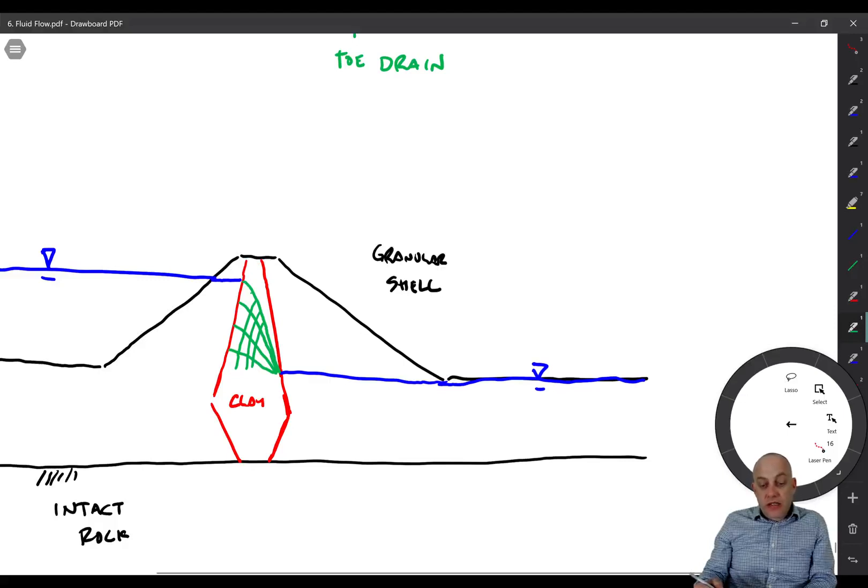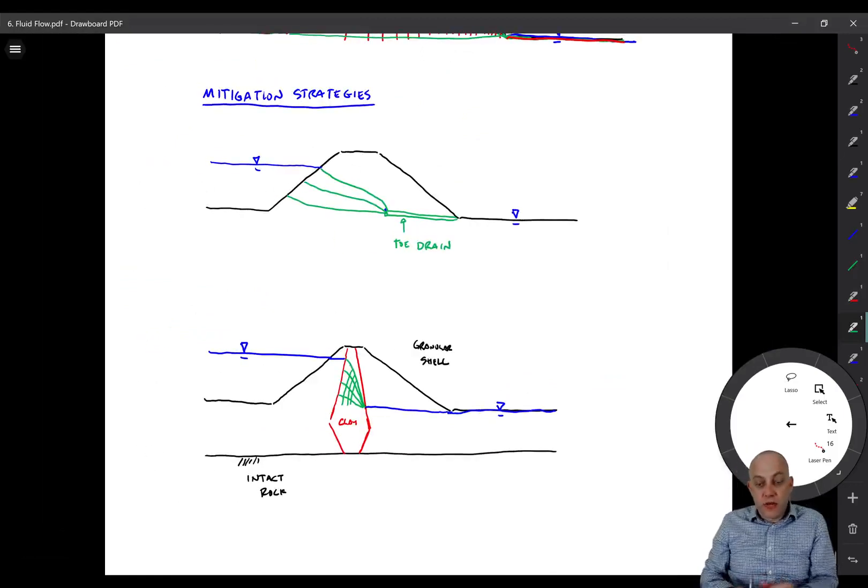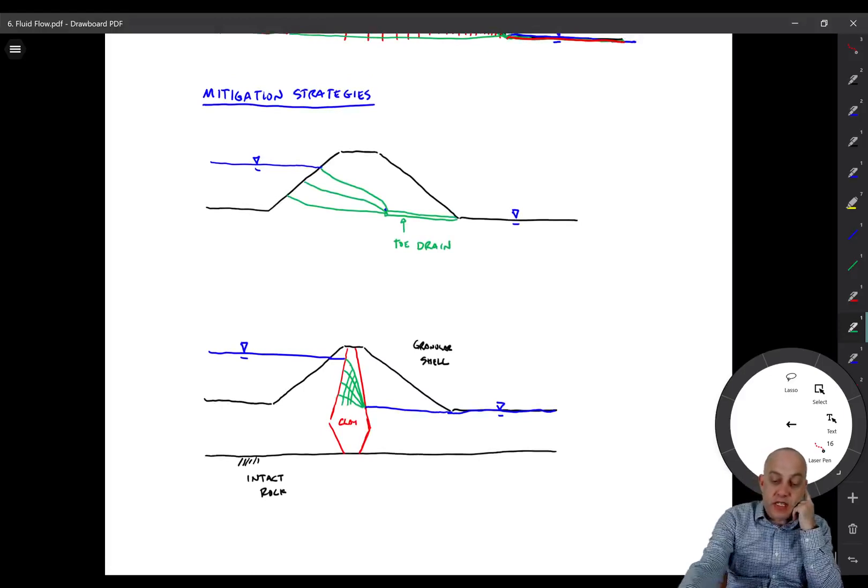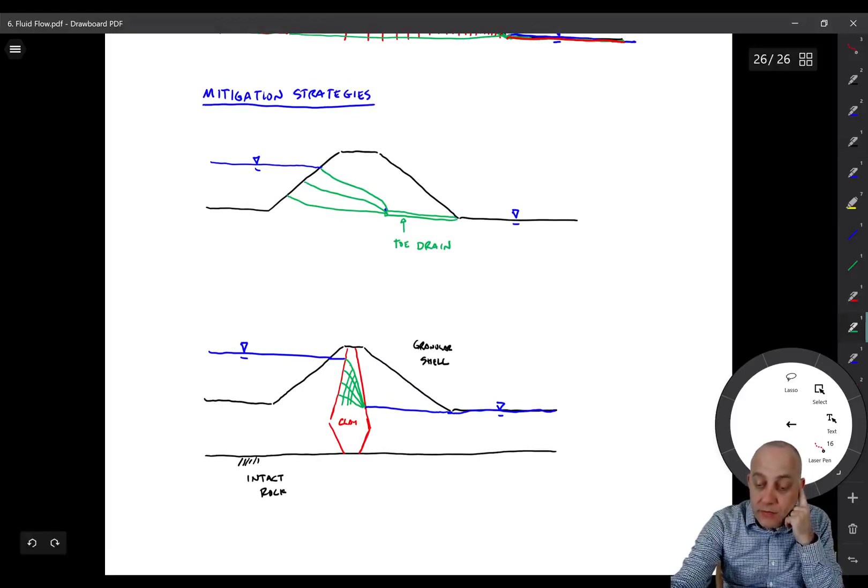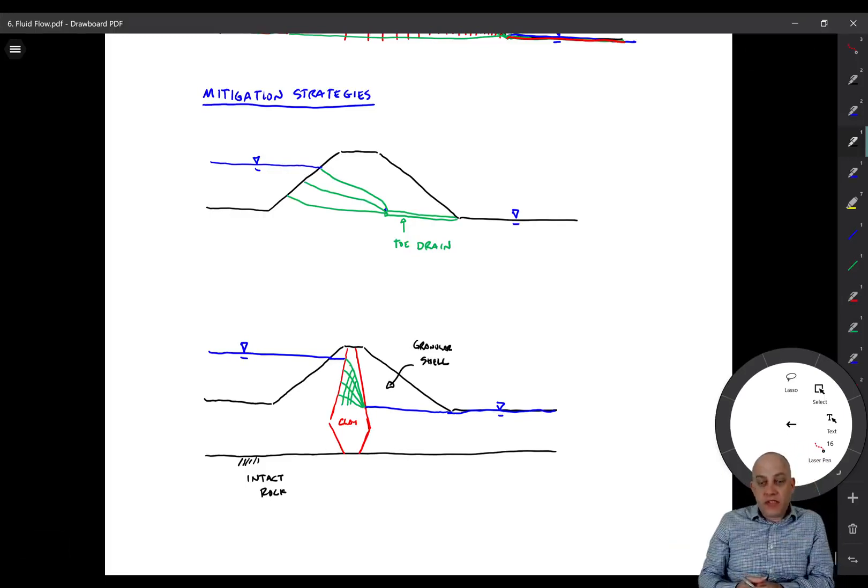So anyway, those are two different mitigation strategies for kind of controlling flow through earth structures. And there is some judgment involved in getting that top flow line, also called the phreatic surface. But it's not that difficult to sketch it in. Once you have it sketched in, it's pretty easy to sketch that flow net to go along with it.